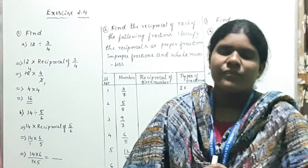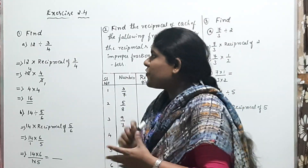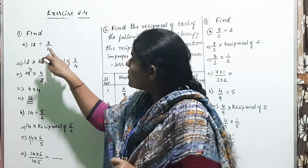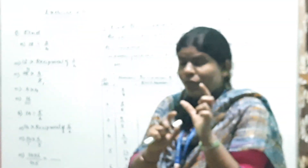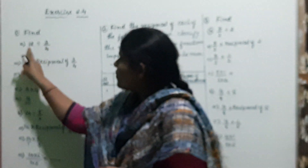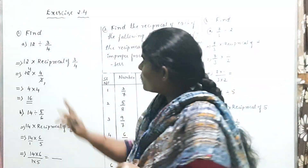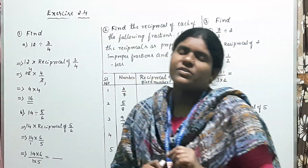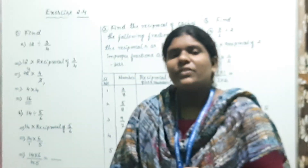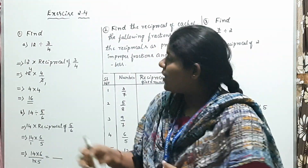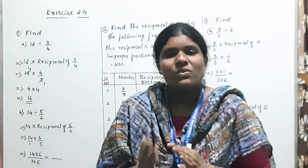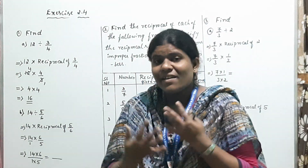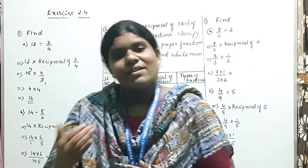I will explain some problems. The first question is: find 12 divided by 3/4. Here, 12 is a whole number and 3/4 is a fraction — this is division of a whole number by a fraction. The reciprocal of a fraction is 1 divided by the number, also called the multiplicative inverse, where you interchange the values of numerator and denominator.